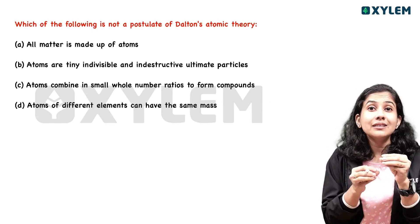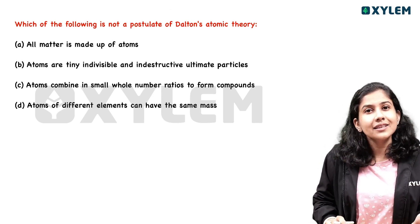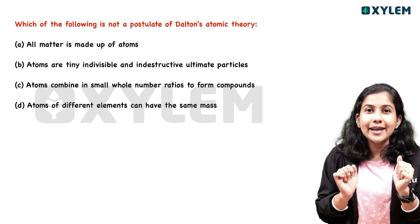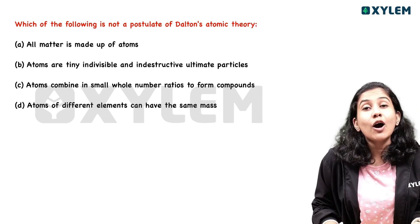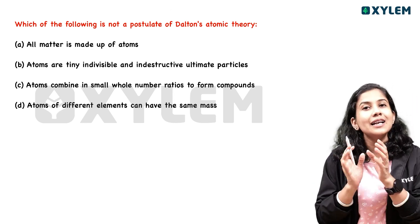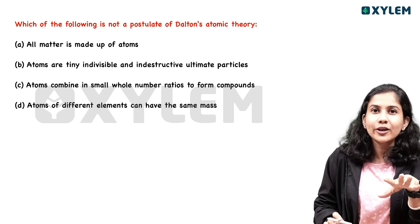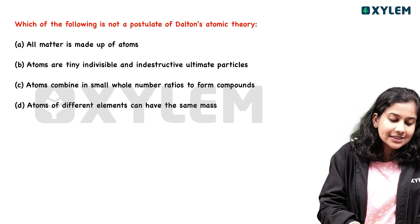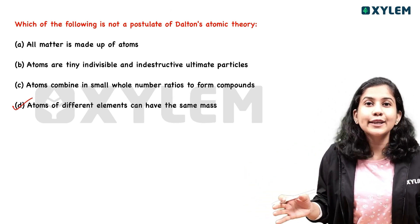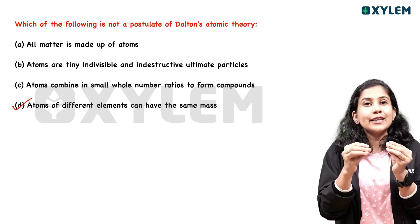Which of the following is NOT a postulate of Dalton's atomic theory? We are learning the postulates one by one. First: all matter is made up of atoms. Second: atoms are tiny, indivisible, and indestructible ultimate particles. Third: atoms combine in small whole-number ratios to form compounds. These three are Dalton's postulates. The option 'atoms of different elements can have the same mass' is NOT Dalton's postulate — that is option D and the correct answer.